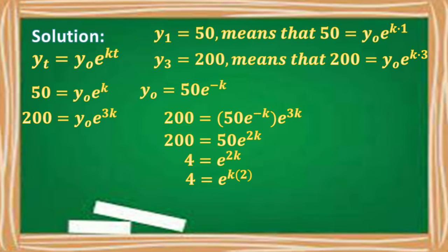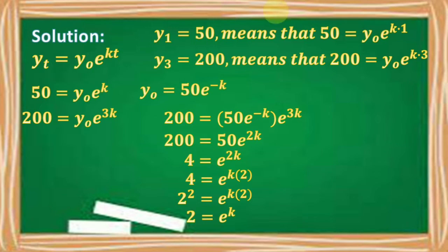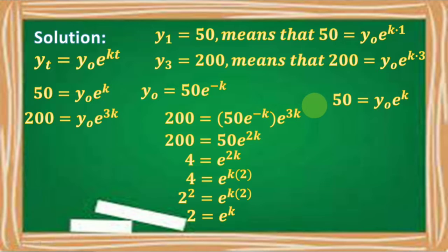The left side, 4, can be written as 2 squared, so 2² = e^(kt·2). Applying the rule for exponential equations, we cancel the exponent 2 from both sides, giving us 2 = e^(kt). Therefore, e^(k) = 2.